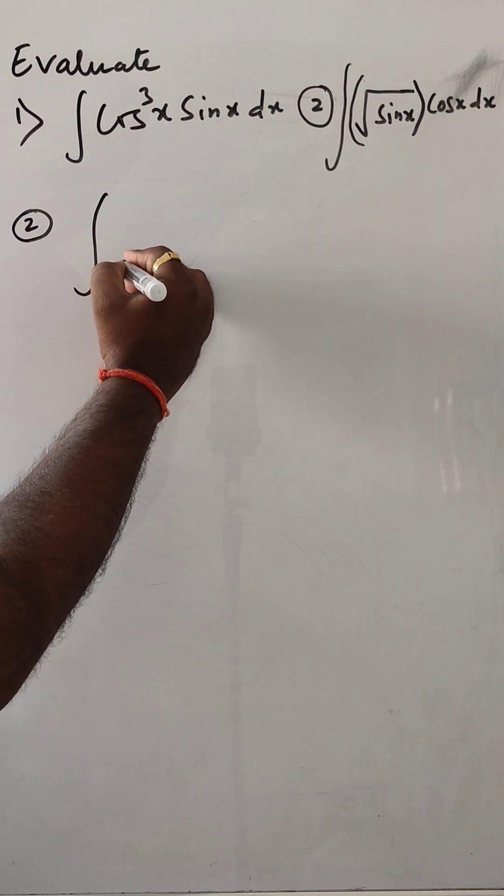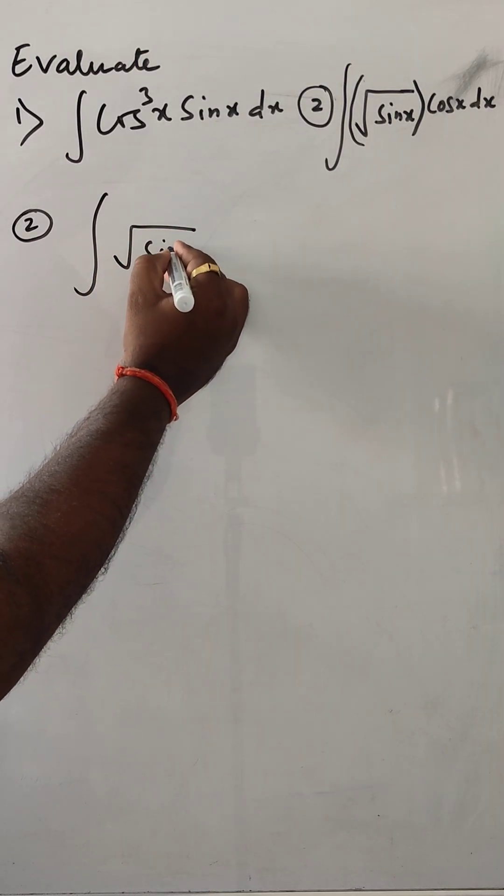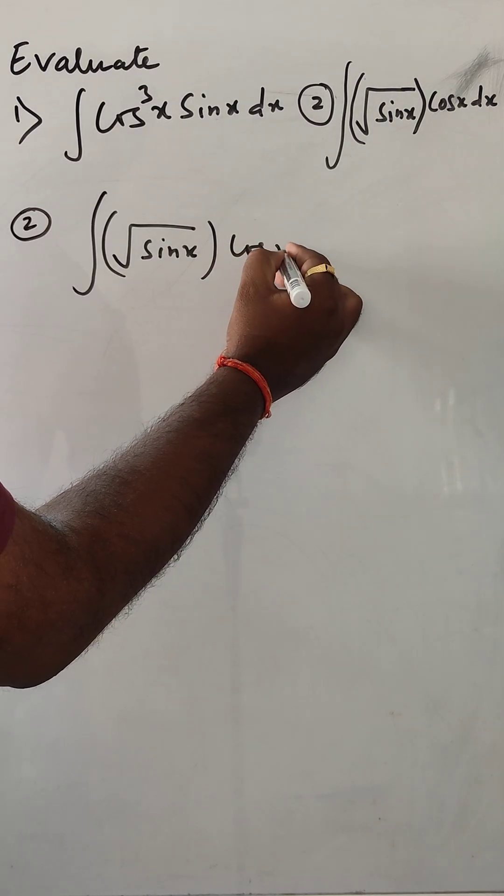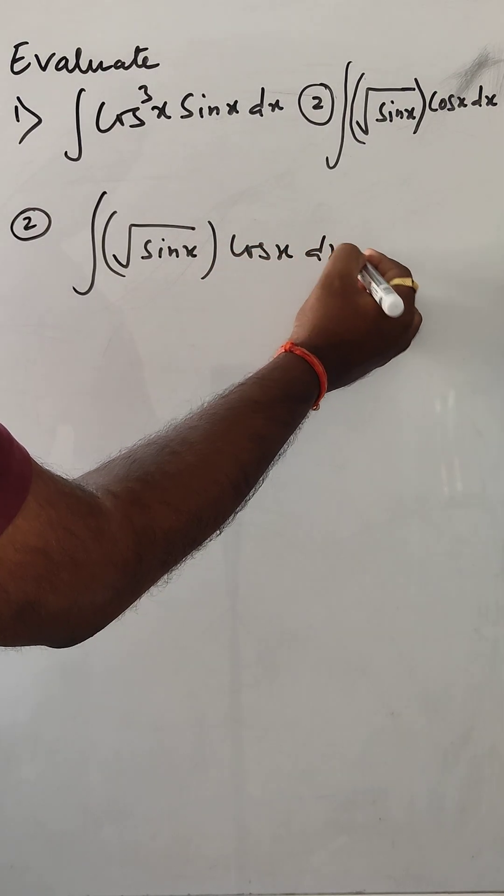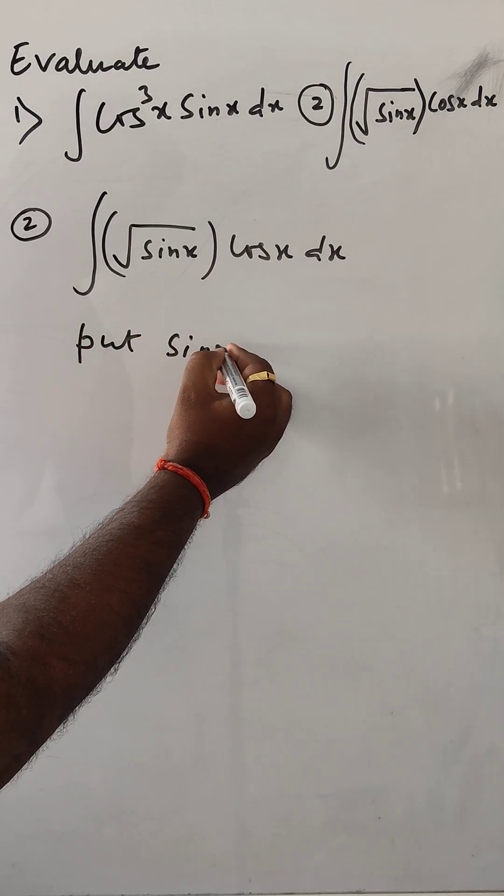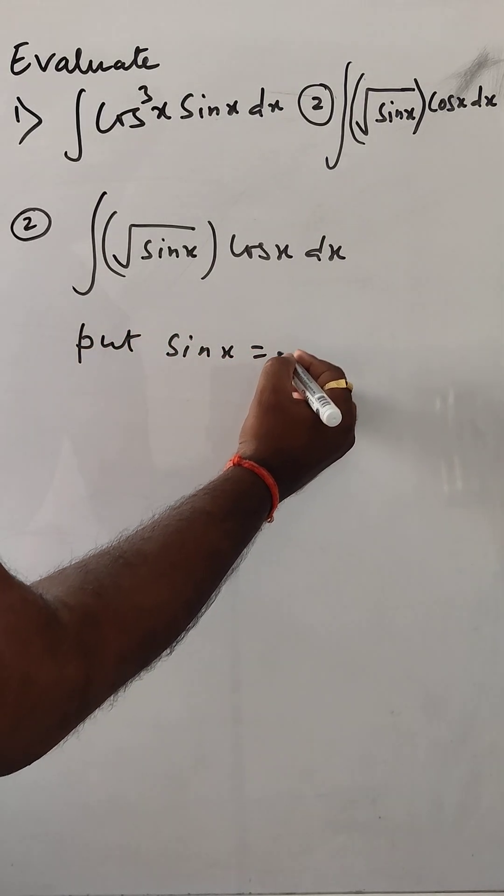Integration of square root of sin x times cos x dx. So put sin x equal to t.